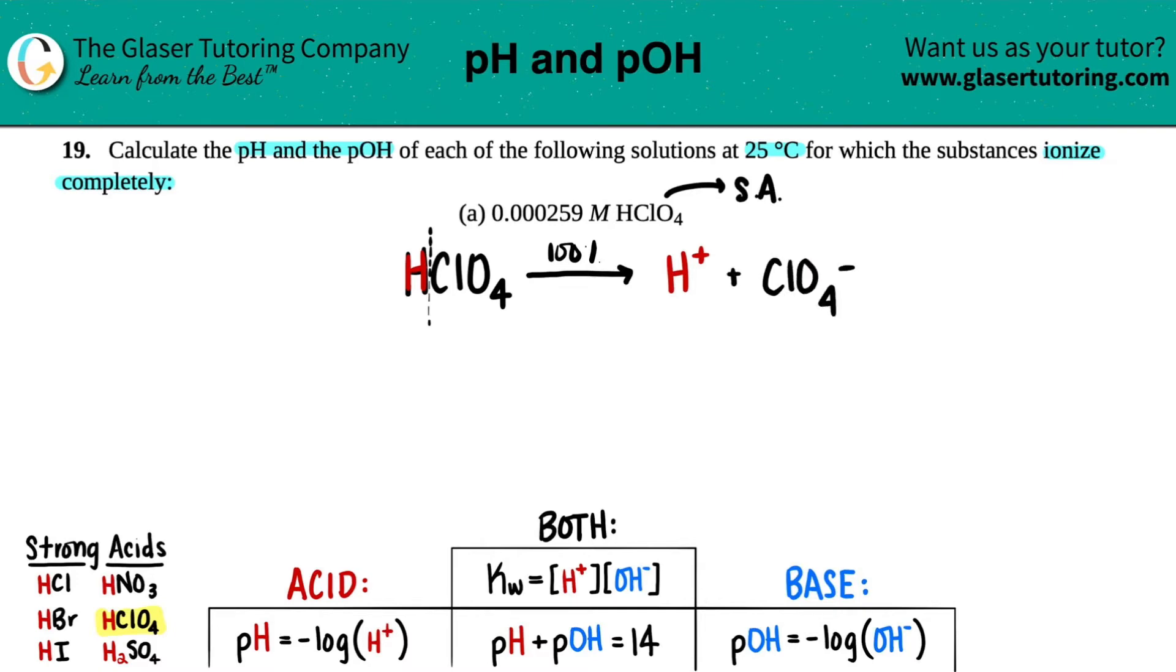Now, the next thing I'm going to do is I'm just going to say, okay, they told us that we're going to start with 0.000259 molarity. Now, we have to figure out how much H plus is going to be here and how much ClO4.